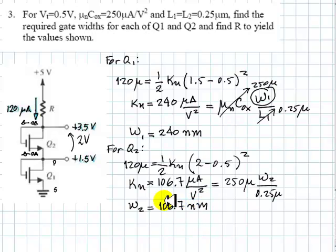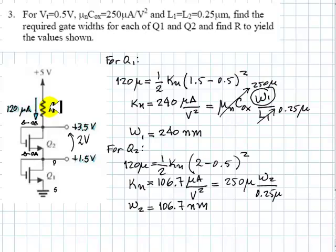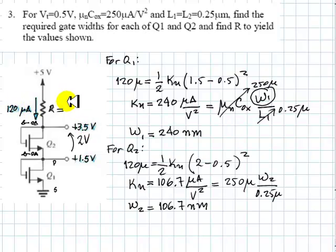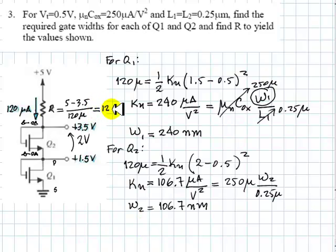That's the solution for this exercise — we have found the widths of both transistors that realize that current and those voltages. The question remains: what is the value of this resistor? That resistor value we could have found even before computing the channel widths. It is 5 minus 3.5 volts divided by the current 120 microamps, which is 12.5 kilohms. And that completes the solution to this exercise.